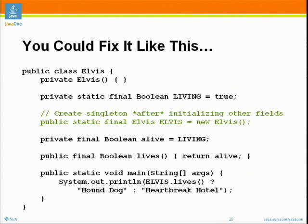So how do we fix it? If we create the singleton after we've initialized the field upon which it depends — just swap those two lines around — we fix the problem. We haven't done away with the recursive initialization, but it's okay because by the time we do the recursive initialization, we have already assigned a value to living, and alive takes on that value which is true.